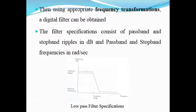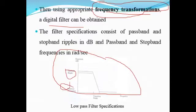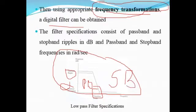In analog filter design, we use the concept of frequency transformations. By using frequency transformations, we can get the response of a digital filter using the analog specification. This shows the response of a low-pass filter, which has a passband ripple, stopband attenuation, and transition width. The filter specifications include passband and stopband ripple expressed in decibels, and passband and stopband frequencies in radians per second.